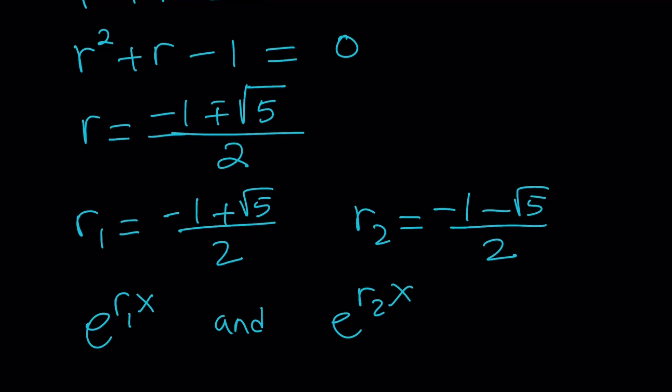Therefore, e to the r1x and e to the r2x are both solutions. But guess what? If they are solutions, their linear combination is also a solution. And that's actually the general solution.